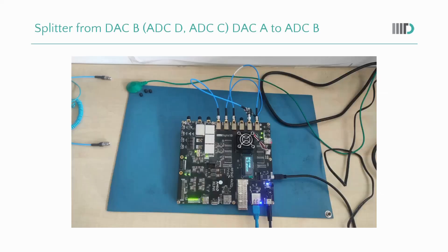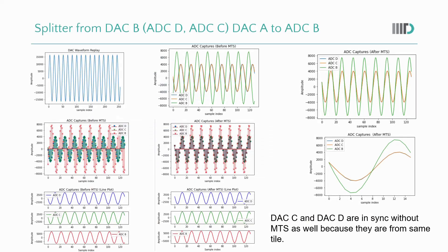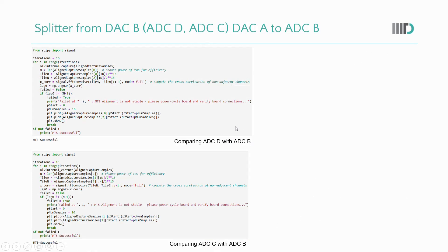In this configuration, we have a splitter from DACB going into ADCD and ADCC, and from DACA to ADCB. As you can see in these plots, before MTS, ADCC and ADCD are aligned because they are from the same tile, and the amplitude is 4000 because ADCC and ADCD are coming from the splitter. ADCB is directly coming from DACA, so its amplitude goes to 8000. After MTS, C and D, which were previously aligned, are now aligned with ADCB. We also verified this using the cross-correlation function as discussed in the notebook.